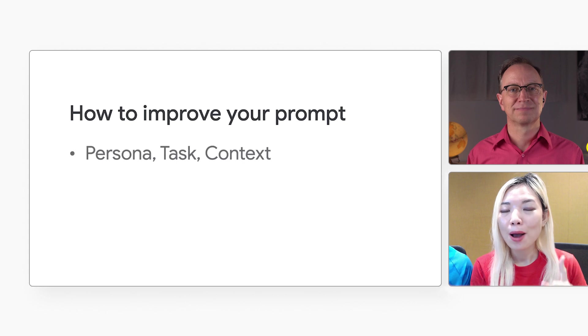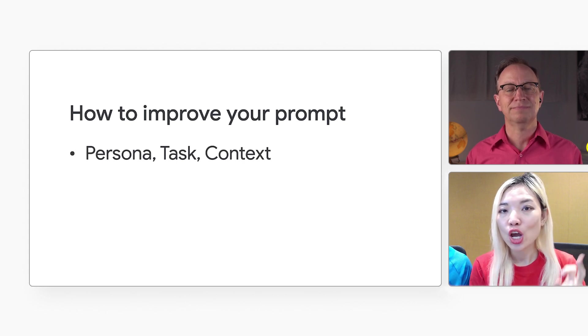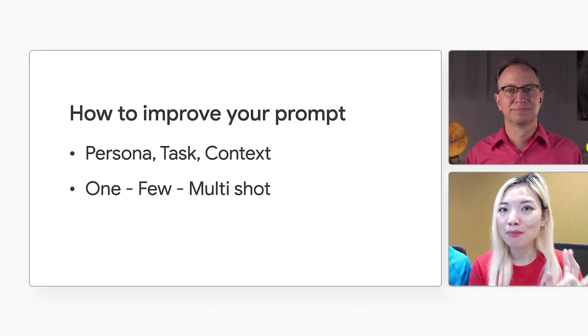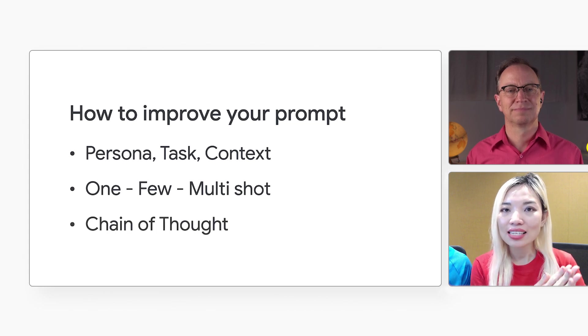To have a better response from the LLM, here's the trick: be specific and provide sufficient context. In our workshop, we teach three ways to make your prompts better. They are: one, persona, task, and context; two, zero-shot, one-shot, and multi-shot; and three, chain of thought. Let's apply each of those to your application.